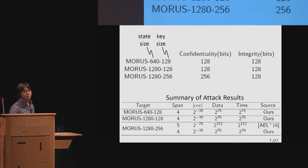MORUS has three members depending on the state size and key size. The confidentiality depends on the key size, and the integrity is always 128 bits. The bottom table compares the results of the previous work and this one. The biggest version of MORUS has already been attacked at EuroCrypt 2018. The complexity was 2^152, so it's a bit expensive. Due to this complexity, the attack couldn't be applied to a smaller version of MORUS which claims security up to 128 bits. In this research, we found linear trails with much higher correlation, which requires only 2^76 data complexity and time complexity. This allows us to attack all versions of MORUS.